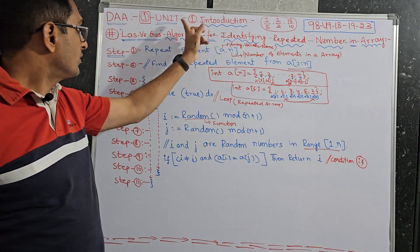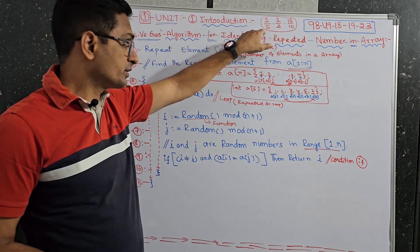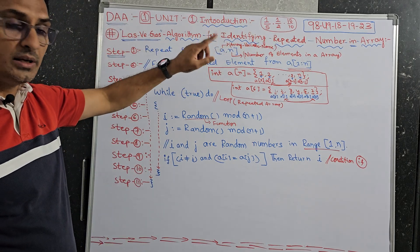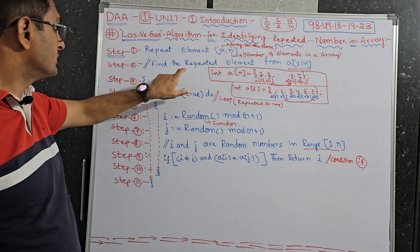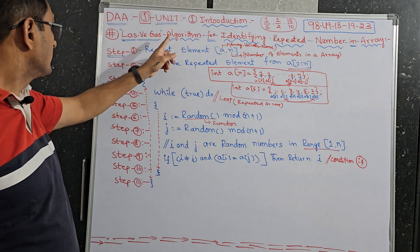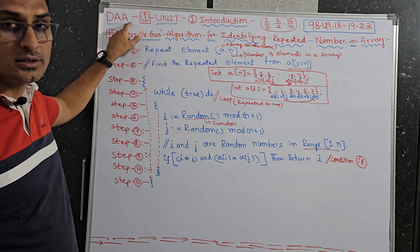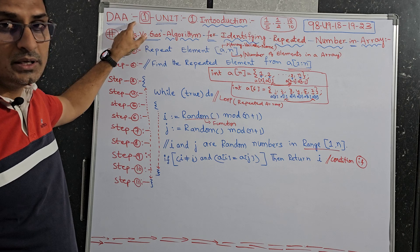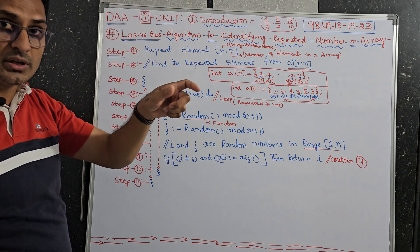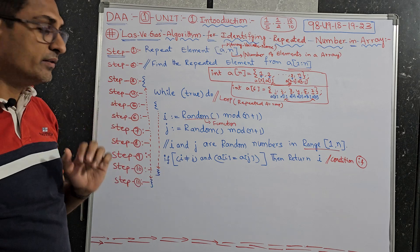This topic is from the first unit, first chapter, introduction — it is the last topic. From first unit, first chapter, introduction, the last topic is Randomized Algorithm, and from that, Las Vegas Algorithm, from the subject Design and Analysis of Algorithm. I am telling this every time because you need to know which question is coming from which part, then you can answer very well.